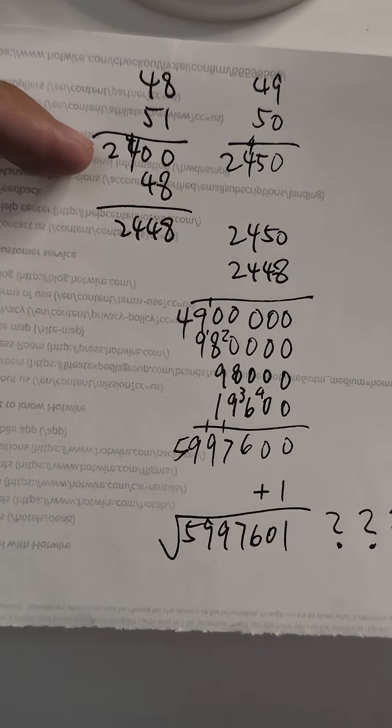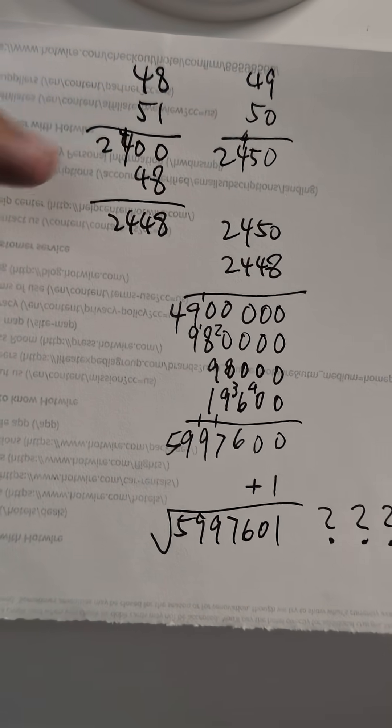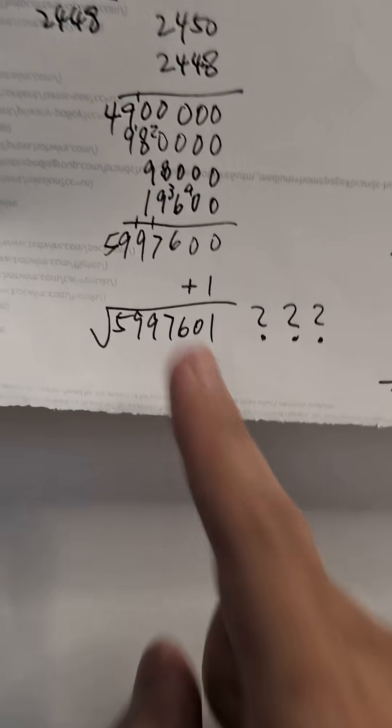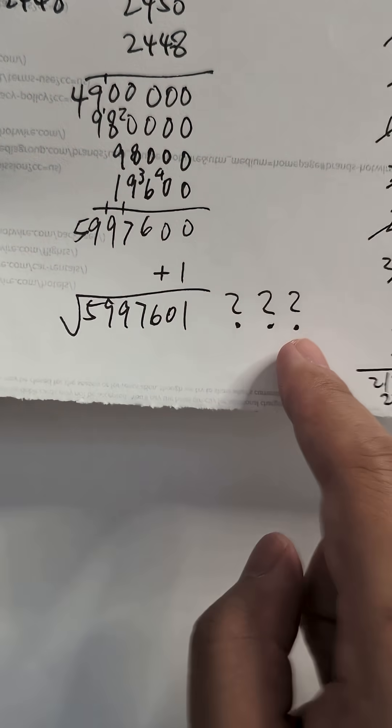You could do 48 times 51, 49 times 50, and then multiply it out. 5 million plus 1, square root of that. Crazy.